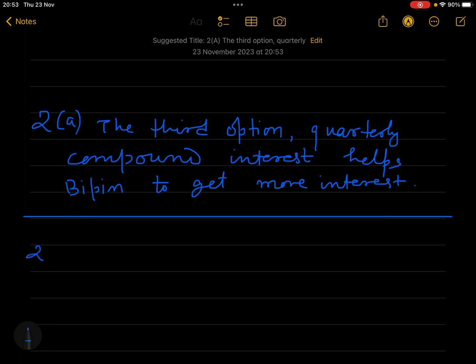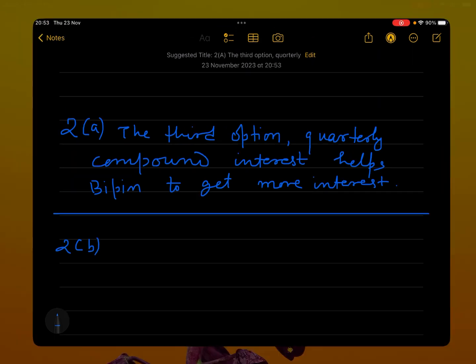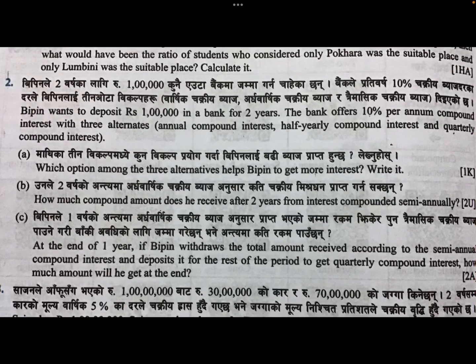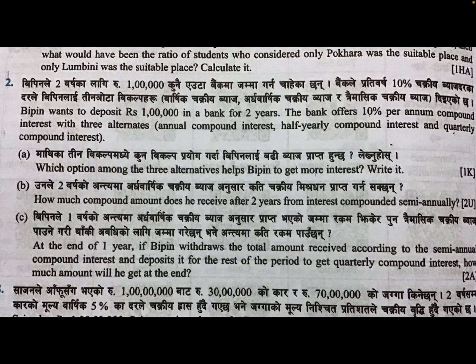Now question number 2B answer we are going to do. Let us see the question first. Number B: how much compound amount does he receive after two years from interest compounded semi-annually? This is a two marks understanding type question.